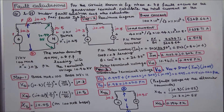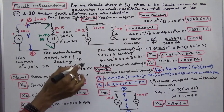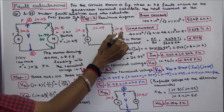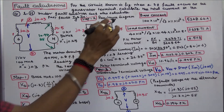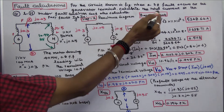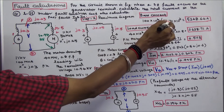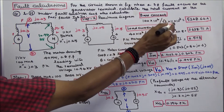The line reactance is J.05 on a 100 MVA base, as given. Next we draw the reactance diagram. The generator reactance is J.3, the motor reactance is J.5, and the line reactance is J.05. Base current is equal to base MVA (100 × 10⁶) divided by (√3 × 11 × 10³), which equals 5248.64 amps.